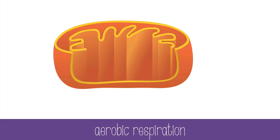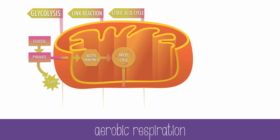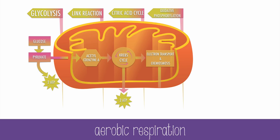Let's briefly overview the steps of aerobic respiration. We can break it into four metabolic events: glycolysis, the link reaction, the citric acid cycle — which is also called the Krebs cycle or tricarboxylic acid cycle — and oxidative phosphorylation, which includes the electron transport chain and chemiosmosis.